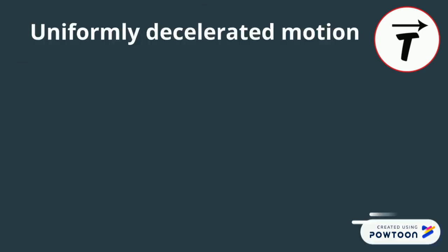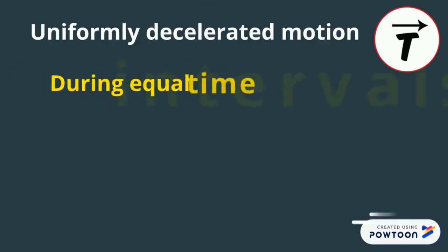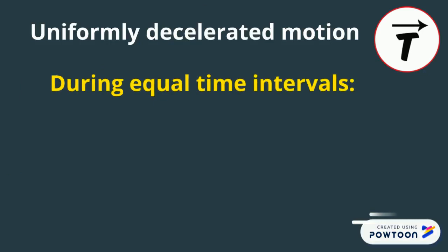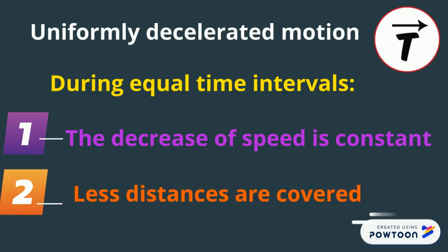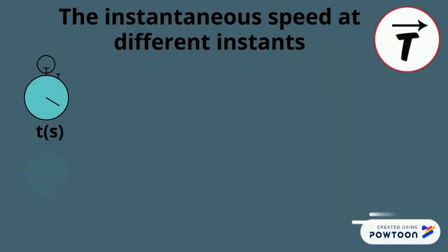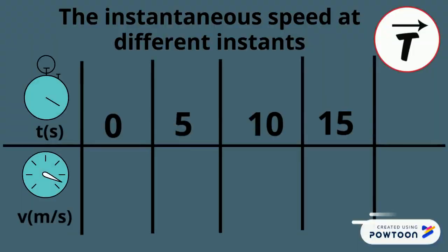In a uniformly decelerated rectilinear motion, during equal time intervals, not only does the speed decrease, but also the decrease of speed is constant, and less distances are covered during equal time intervals. In this table, we measure the speed of the scooter each 5 seconds. The speed decreases by 4 meters per second each 5 seconds. At instant t equals 15 seconds, the speed becomes 0 and the scooter stops.